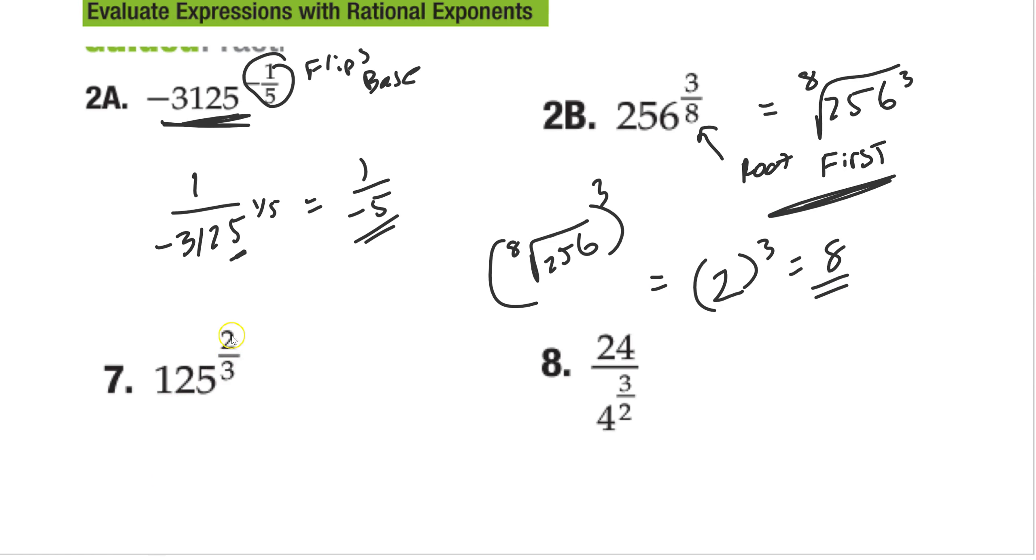So the same thing here. Right, 2 thirds, so we're going to do the root first. So we're going to do the cube root of 125, and then we're going to square it. Cube root of 125 is just 5. 5 squared is 25. Same with the next one. I'm just going to do some dots, trying to work. 4 to 3 halves, right? So we're going to square root first. Square root of 4 is 2. 2 cubed is 8. So that's 24 over 8, which is 3.